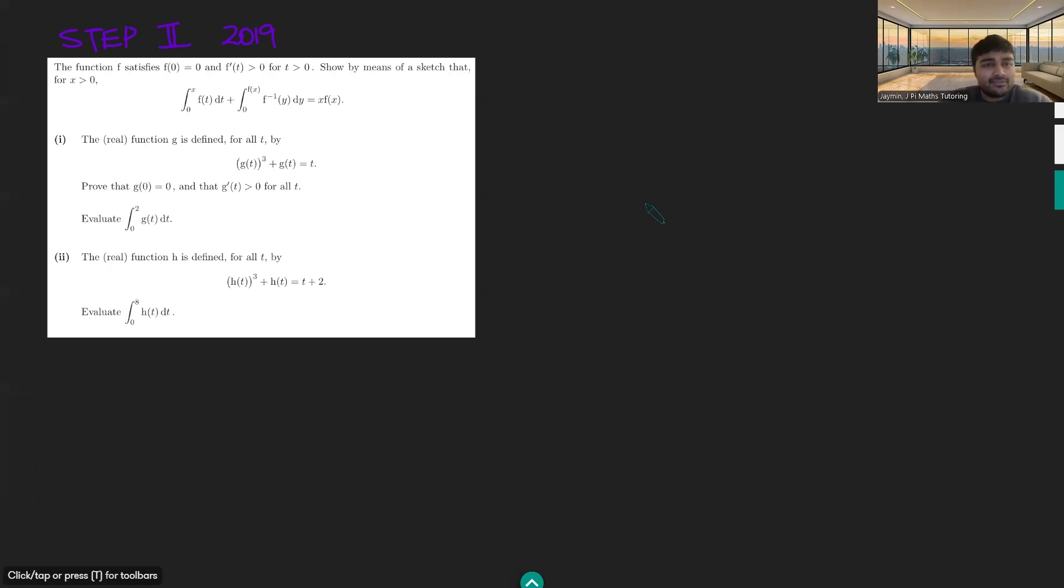Part 1: the real function g is defined for all t by g(t)³ + g(t) = t. Part 2: the real function h is defined for all t by h(t)³ + h(t) = t + 2. Evaluate the integral from 0 to 8 of h(t) dt. This is a really nice problem and can show you a cool integration technique which maybe you haven't seen before.